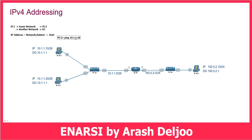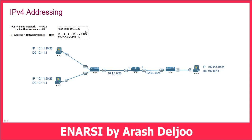For example, in PC1, if we want to find the network ID and the host ID, we use a binary conversion. The IP address is 10.1.1.10 and the subnet mask is 255.255.255.192 — because /26 means 255.255.255.192. The first three octets are the network part, so we don't need to convert them to binary. For the last octet, 192 in binary is 11000000, and 10 in binary is 00001010.